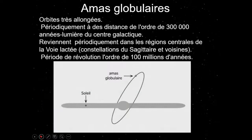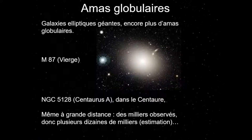Les amas globulaires ne sont pas fixes par rapport à la galaxie — ils sont en orbite autour du centre galactique. Ce sont des orbites très allongées, non parallèles au plan de la galaxie. Régulièrement, ils vont traverser le disque galactique, ce qui les perturbe fortement. La période de révolution est d'environ 100 000 ans, et ils viennent périodiquement dans la région centrale, vers la constellation du Sagittaire. On a déjà observé des milliers de ces passages, et on pense qu'il y en a des dizaines de milliers observables.